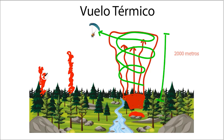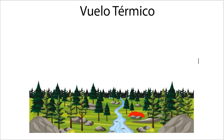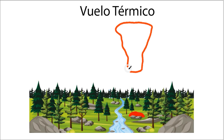Once inside, flying a thermal can feel extremely smooth and stable. The glider remains solid and is unlikely to collapse. So the best strategy for flying thermals calmly is: 1. Find a thermal. 2. Stay inside and core it to the top. 3. Move to another thermal and repeat the process.